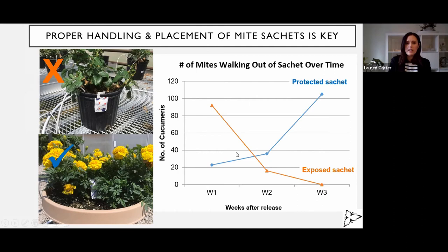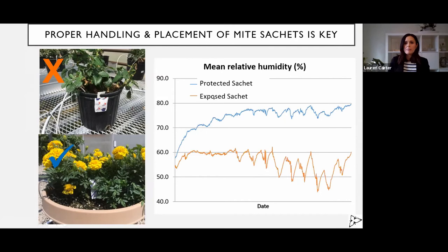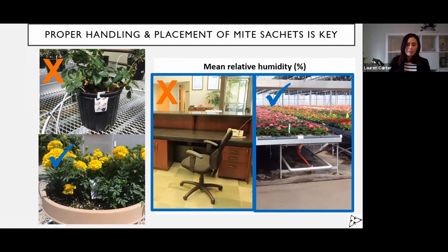This really has to do more with relative humidity than temperature. When the sachet is nestled in the foliage it's around 80% relative humidity, but it can be as low as 40 to 50% humidity when exposed. This is also true for where you want to store your mites. If you can't put them out right away, don't store them in a dry office or cooler. It's better to put them in the greenhouse under the bench where they're protected from the sun and it'll be more humid.